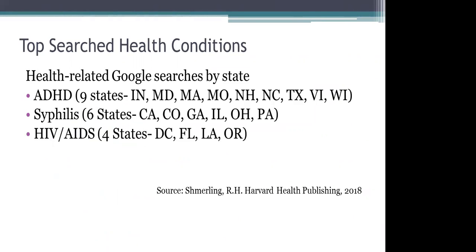Regarding how we search based on region: the top three health-related Google searches within the last year are ADHD, syphilis, and HIV/AIDS. Nine states have looked for ADHD — many parents are unsure about symptoms and don't want to jump the gun. Philadelphia has the highest rate of syphilis, so six states have had the majority of persons looking for syphilis information. Four states show the highest rates of HIV, which is why those conditions are prevalent in Google searches.